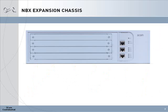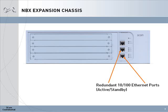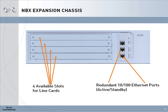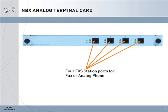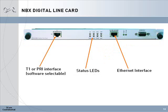The NBX expansion chassis is used to expand the trunking capability of the NBX system. It has redundant Ethernet interfaces used in an active standby mode. There are four module slots available, which can be populated with different line cards. The NBX analog line card provides four FXO trunk ports for POTS or analog trunk lines and includes a power fail transfer port. The NBX analog terminal card has four FXS station ports for analog phones or fax machines. The NBX digital line card has a digital port which can be software configured for either T1 or PRI functionality, with LEDs to indicate circuit status.